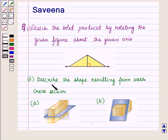And the second part is: describe the shape resulting from each cross section. Here these two figures are given to us.